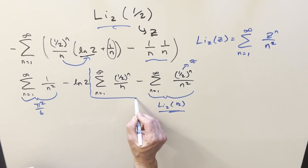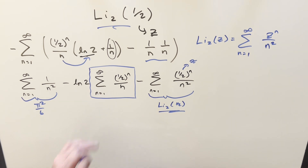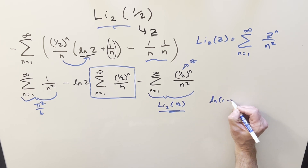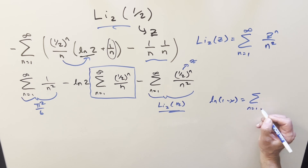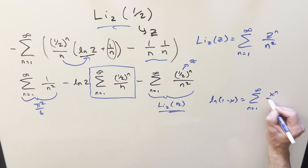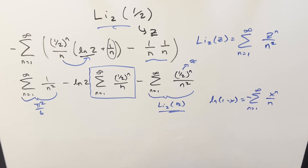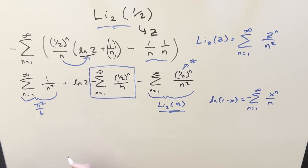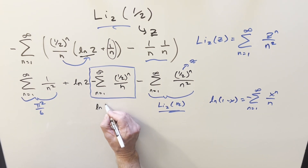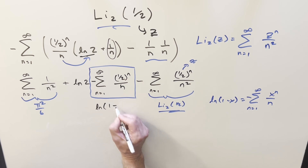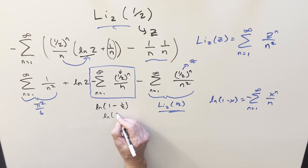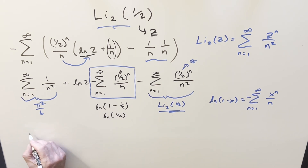And this third piece — the sum of (1/2)^n / n — is essentially the power series for ln(1 − x). Recall that ln(1 − x) equals minus the sum from 1 to infinity of x^n / n. Changing the sign and plugging in x = 1/2, this sum equals ln(1 − 1/2) = ln(1/2). So this piece is just ln(1/2).